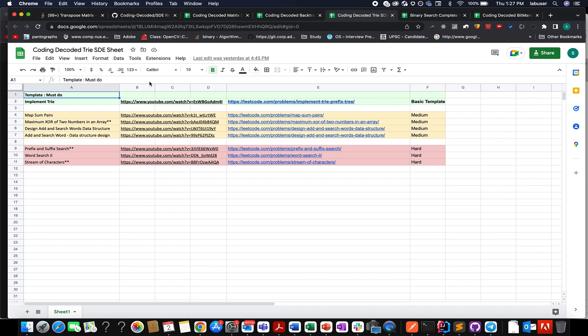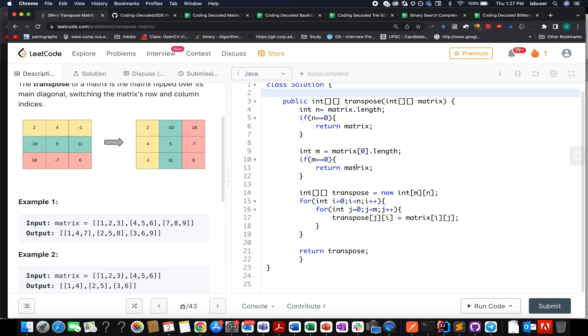Now let's get back to the question and conclude it further. Here I have calculated the number of rows that I have, I have calculated the number of columns. In case the rows are zero, I simply return back the matrix. Columns are zero, I return back the matrix. Otherwise, I go ahead and create the transposed matrix, the output matrix that I want to create, and I iterate over it one by one: i equals to zero, i is less than n, j equals to zero, j is less than m, so row-wise and column-wise.